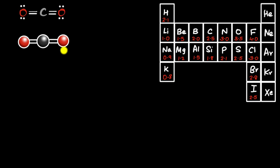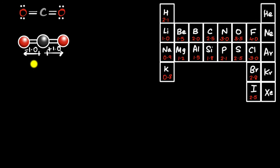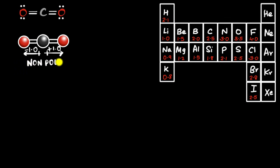Because oxygen pulls the shared electrons toward itself, oxygen gets a partial negative charge and carbon gets a partial positive charge. We can show this with arrows: both oxygens pull electrons away from the central carbon. But look — you have two polar bonds pointing in exactly opposite directions. The electronegativity difference is 1.0, so the vectors are equal and opposite, and they cancel out, giving zero net polarity.